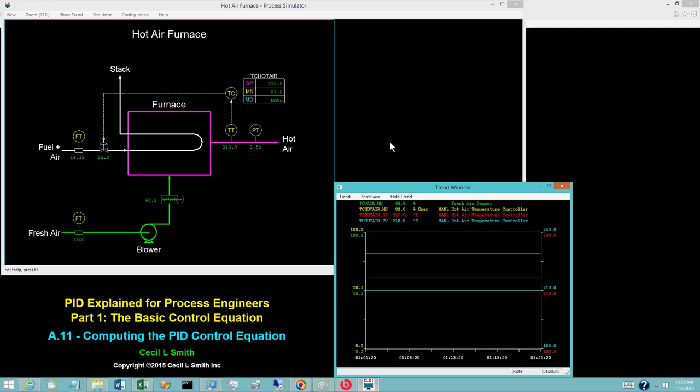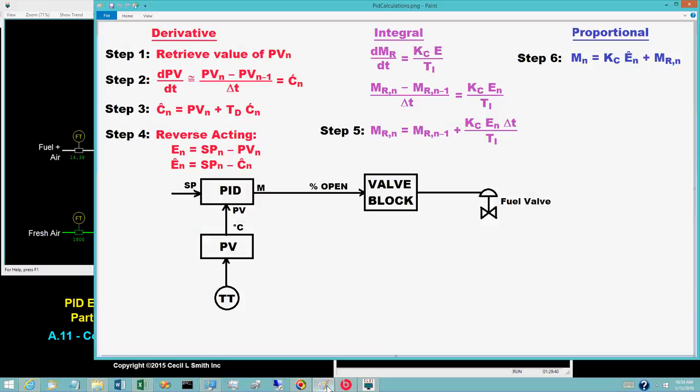The difference equations are computed on a time interval known as the sampling time, delta t. An iteration is one execution of the difference equations. The values computed on an iteration are designated by a subscript. Subscript n is the current iteration. Subscript n minus 1 is the previous iteration. Subscript 0 is the first iteration following a switch to auto. If time 0 is the time the controller would switch to auto, then iteration n occurs at time n delta t.